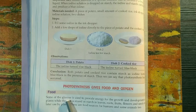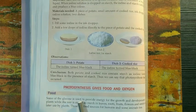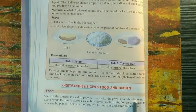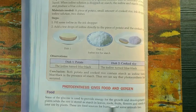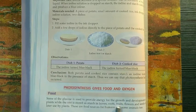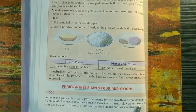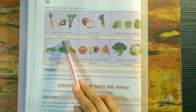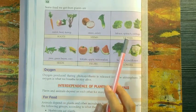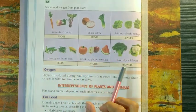Glucose is produced during photosynthesis and is a source of energy for plants. Some glucose is used for their growth and development, while extra glucose is stored in the form of starch in leaves, roots, fruits, flowers, and seeds. Parts of a plant that can be eaten as food are roots, stems, leaves, seeds, fruits, and flowers.